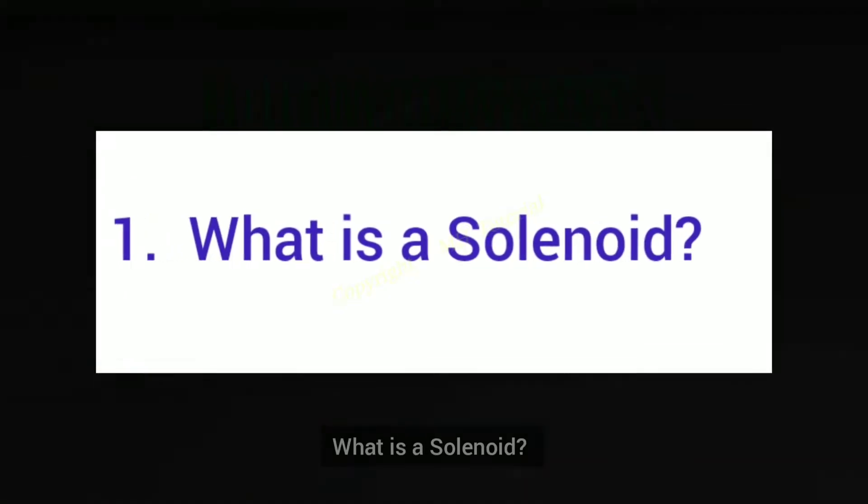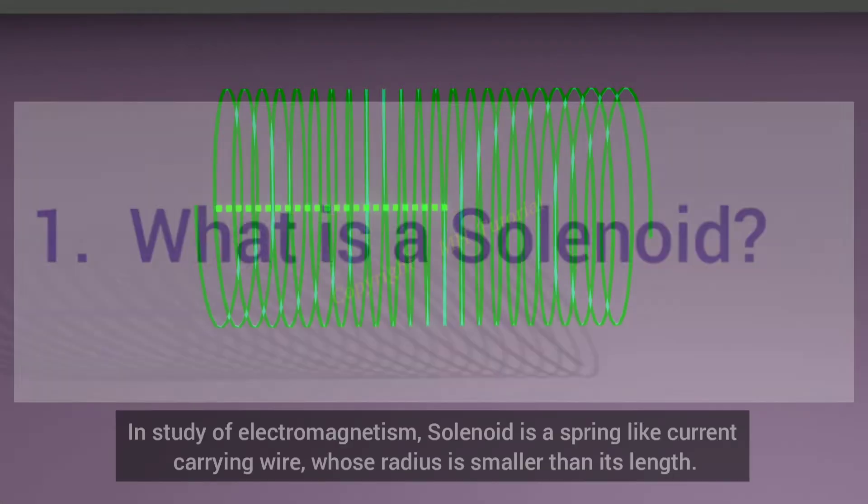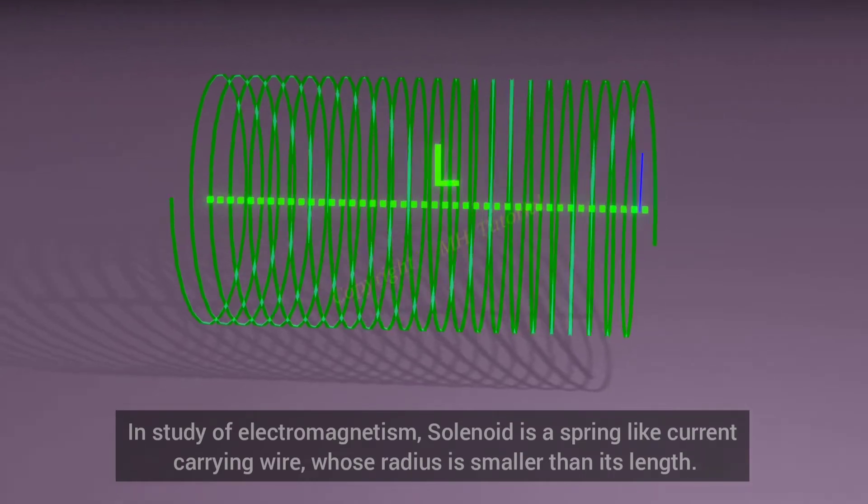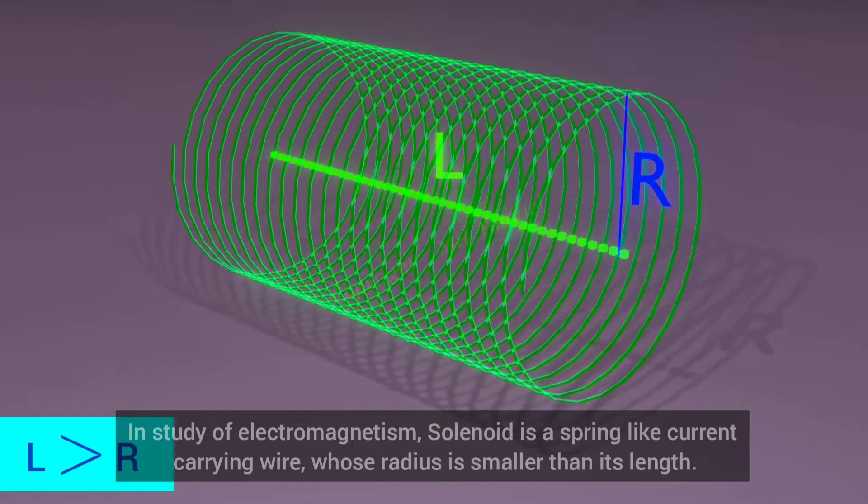So let's start with the first question. What is a solenoid? In study of electromagnetism, solenoid is a spring-like current-carrying wire, whose radius is smaller than its length.